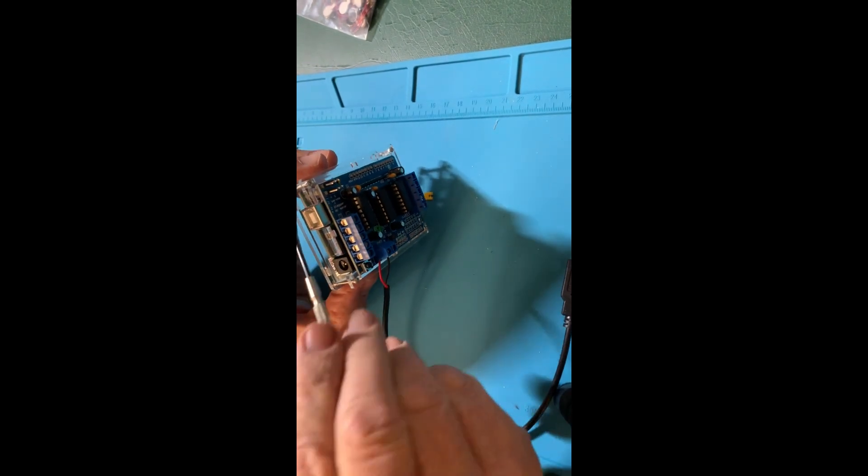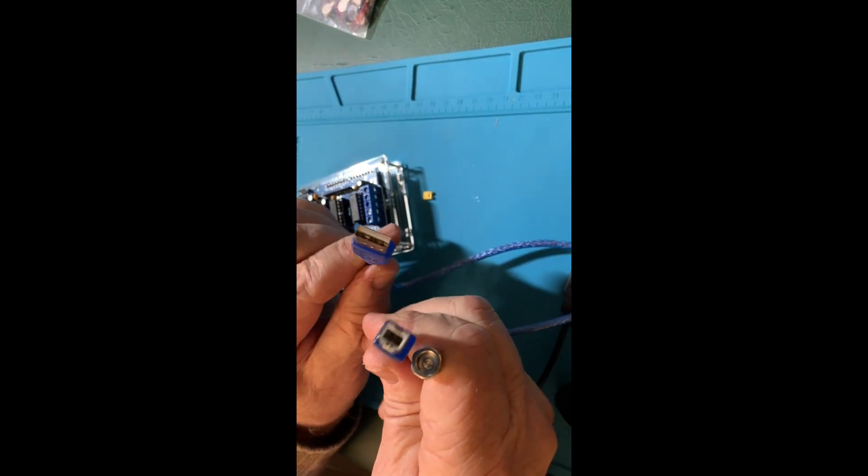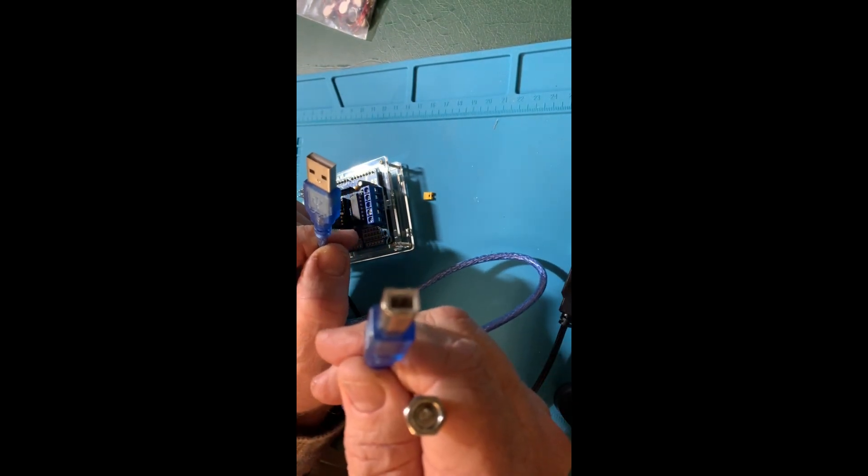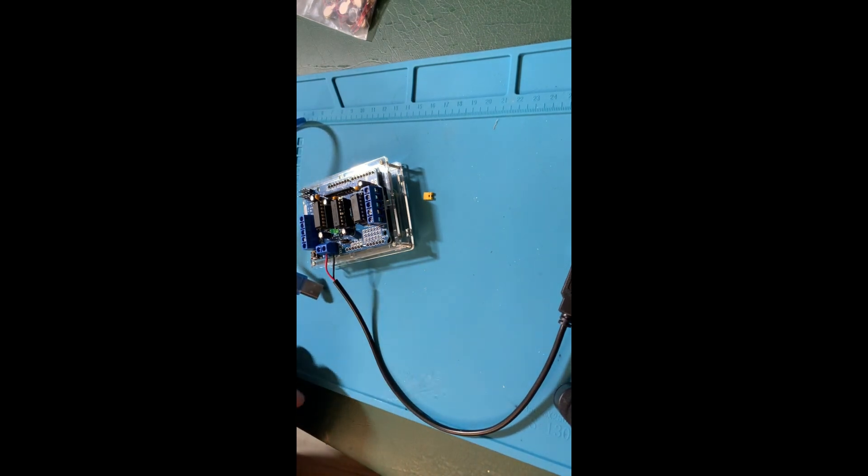And then we will connect the Arduino cable. This is the same one that we program it with. It's a classic USB A to B, the old style used to be on printers. This goes to the computer. This goes in for programming. And then we will use this to power the Arduino itself. So we now have a controller assembled. Let's get on to building the fingers.